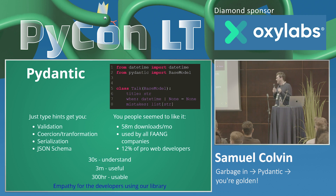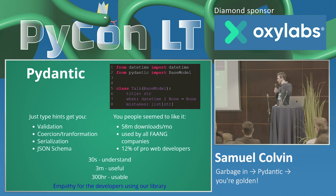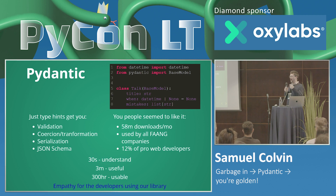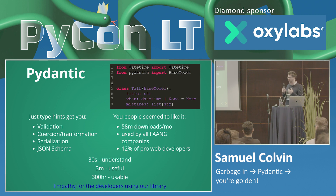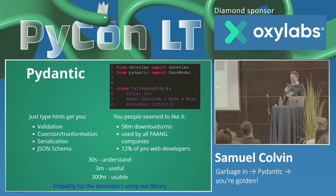Most importantly of all, I think this idea of empathy for your developers — or for your users — is really important in software development, whether you're building an API, an open source library, or an internal application used by other people in your team. Thinking about how other people are going to use it — who don't understand what's inside the black box, who don't have the time or inclination to understand all the stuff you've done — is super important, because very little of our time is actually spent writing the core of an algorithm.